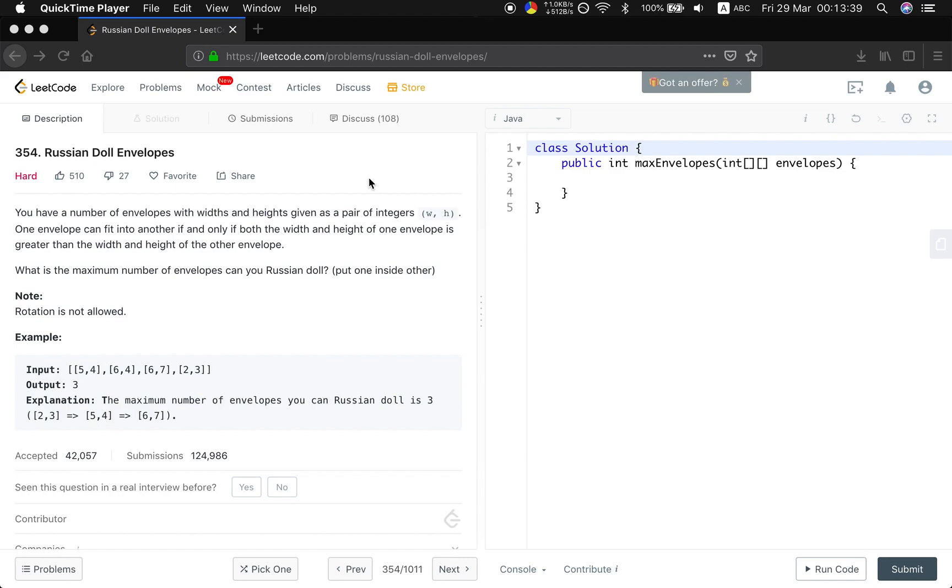The statement is you have a number of envelopes with width and height given as a pair of integers. One envelope can fit into another if and only if both the width and height of one envelope is greater than the width and height of the other envelope.